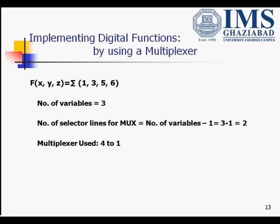Here we have a function f(x,y,z) = Σ(1,3,5,6), that is we have three variables. For three variables, to implement a function we require a multiplexer with selector lines equal to the number of variables minus 1, that is 3 minus 1 equals 2. So the multiplexer used would be a 4-to-1 multiplexer.